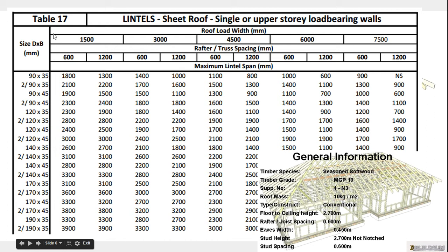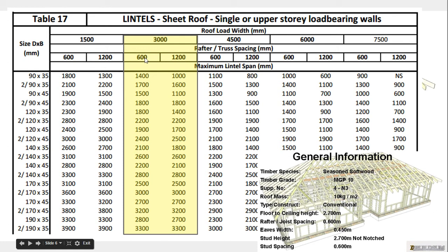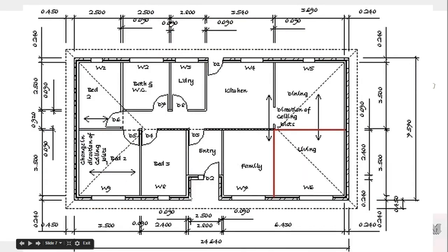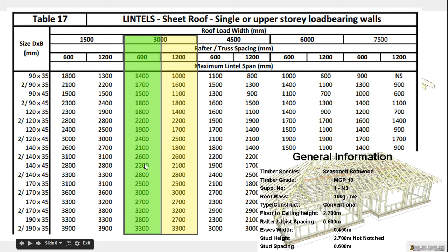Table 17 should be fairly familiar by now. We need the roof load width - ours was under 3 meters, so we're going to use the 3 meter column. Our truss/rafter spacing according to our information is 600mm, so I'm going to use that column. We need to know the maximum lintel span - looking here from timber to timber we've got a span of 2.8 meters. Coming down to 2.8, we find that we can use two 140x45 as our beam.